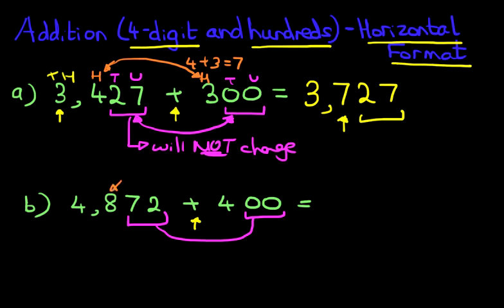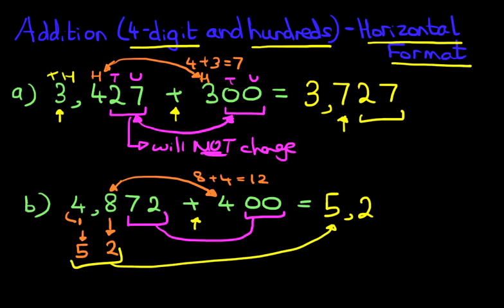We've got 8 hundreds which are going to be added to 4 hundreds. So 8 plus 4 equals, you know this, 8 plus 4 is 12. So therefore, this 8 is going to become 2, and we're going to add 1 over here to the 4. So the 4 plus 1 will become 5. Our answer, therefore, is we've got the 5 and the 2, which is what we have here.